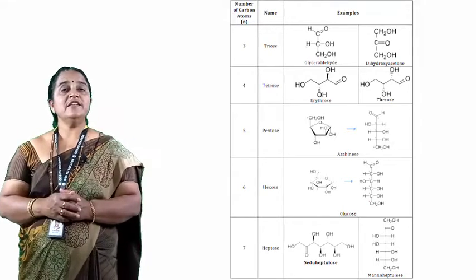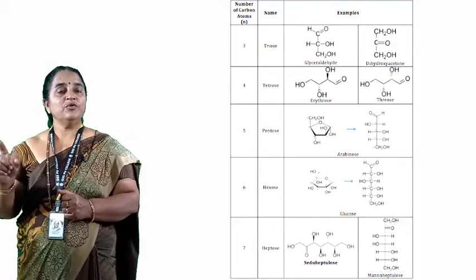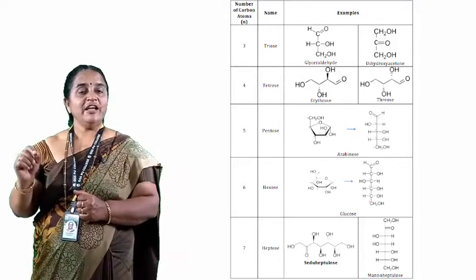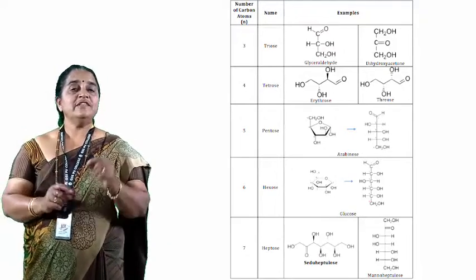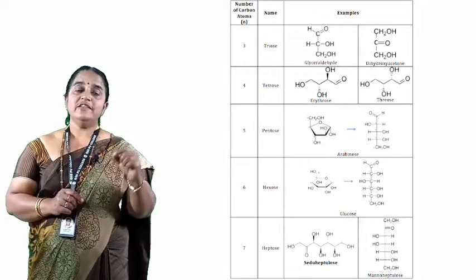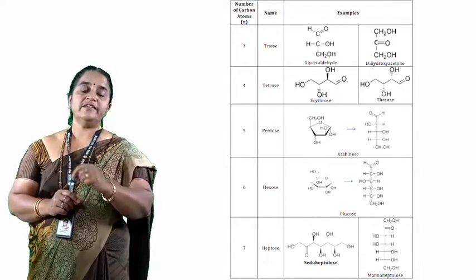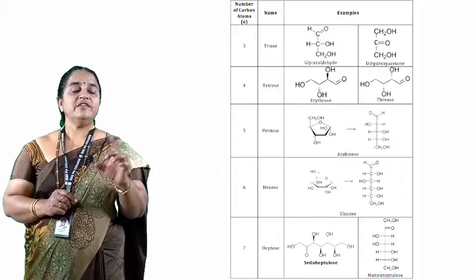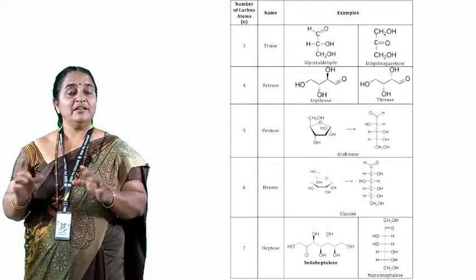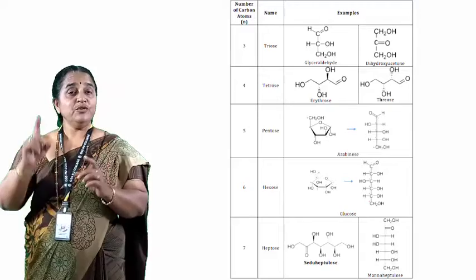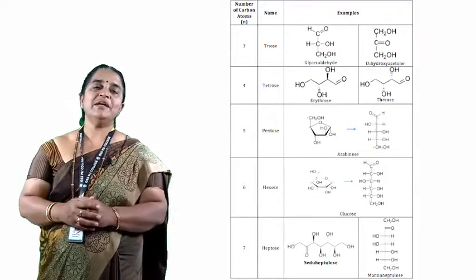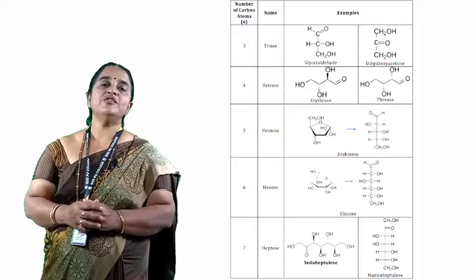Triose is C3H6O3, tetrose is C4H8O4, pentose is C5H10O5, hexose is C6H12O6, and heptose is C7H14O7. When you see the ratio between hydrogen and oxygen, it is always maintained as 2 is to 1.